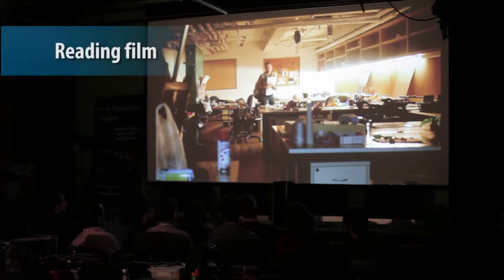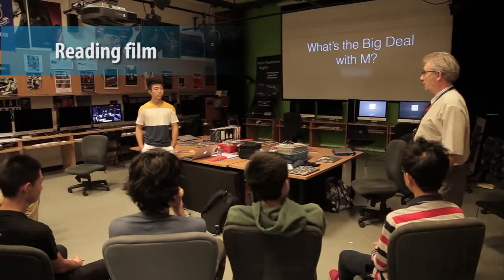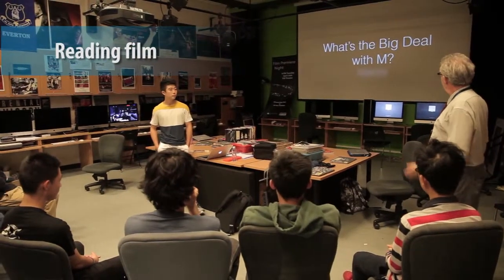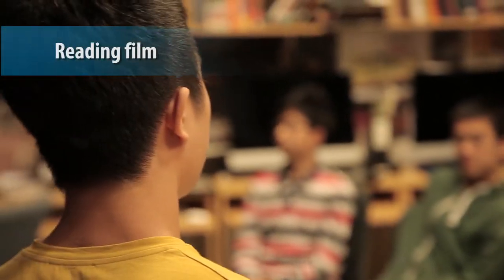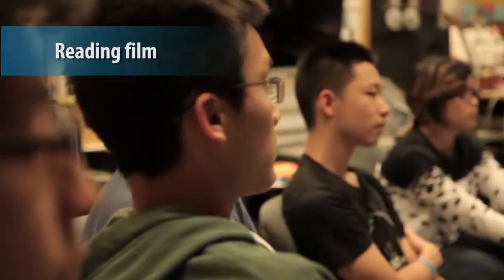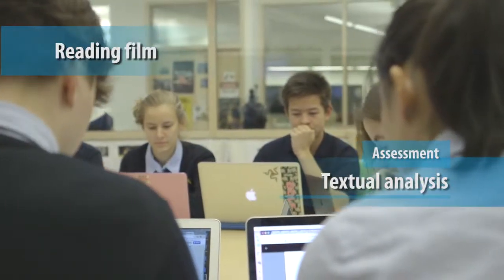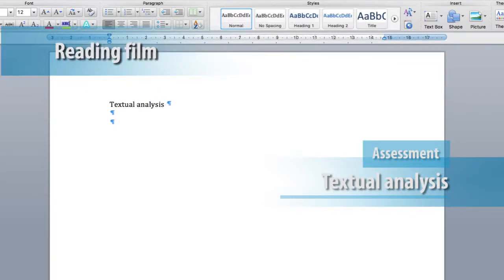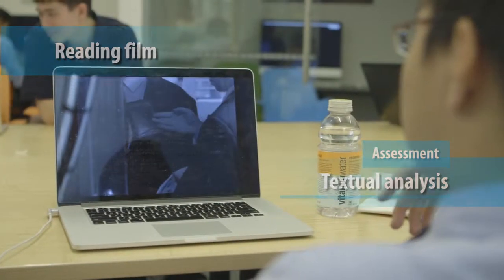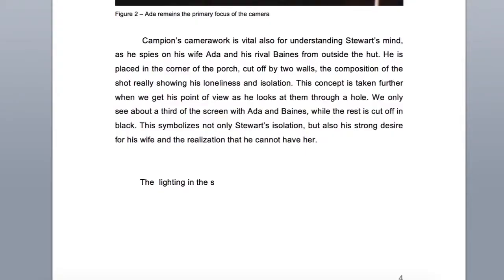The reading film area of the course is concerned with how meaning is constructed in film. Students examine a variety of film texts and learn to identify the techniques filmmakers use to communicate on screen. This area of the course is assessed through a written textual analysis, which scrutinises a short extract from a prescribed film.